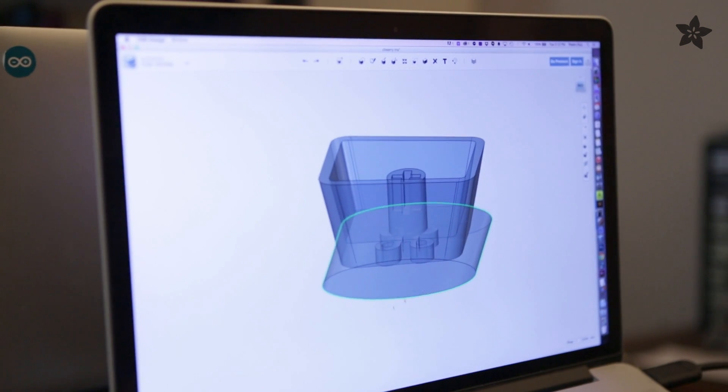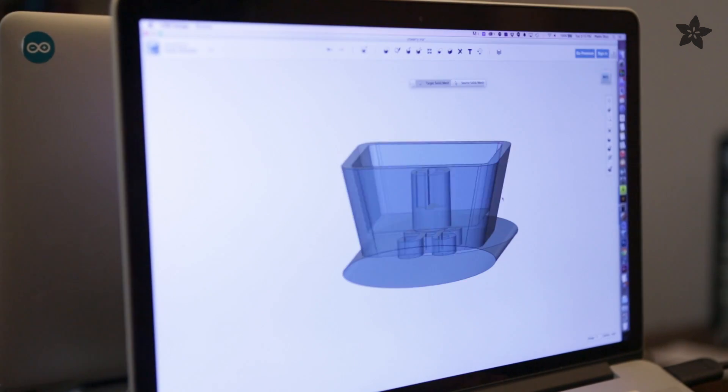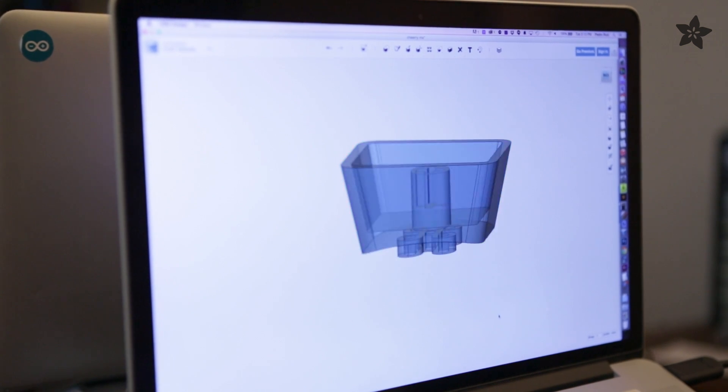To create the curvature, we subtracted an oblong cylinder from the top surface, which is just an easy way to create a slight contour.